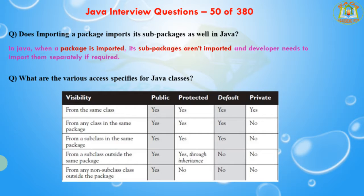From a subclass in the same package, public, protected, and default are all visible, but private is not visible. From any non-subclass outside the package, only public is visible; the remaining specifiers — protected, default, and private — are not visible.